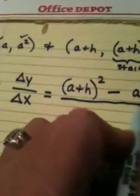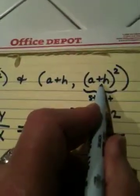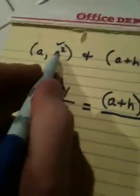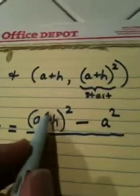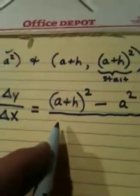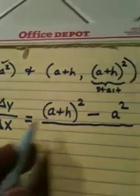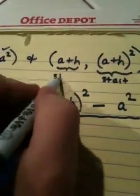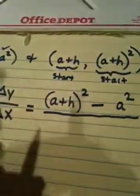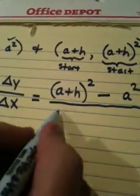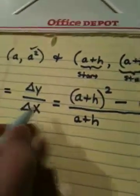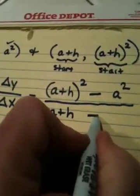So on the top I have this y value, I started with the ugly one minus this y value. Change in y. On the bottom I have change in x. Well, if I started here to begin with for y, I have to start here for x. So my first x value is a+h. Change in means subtract. My next x value is a.